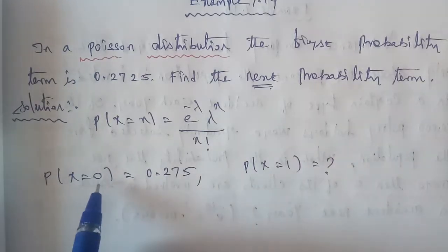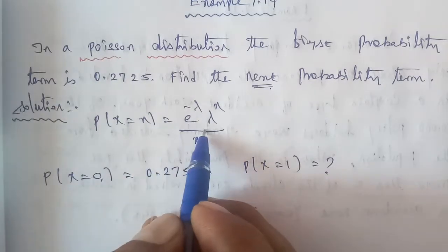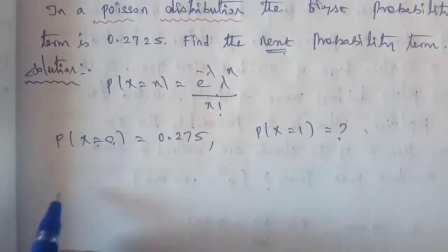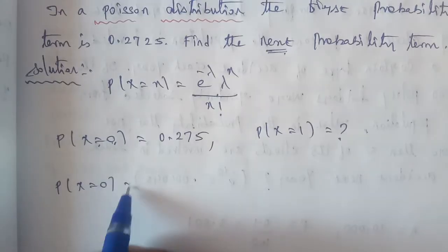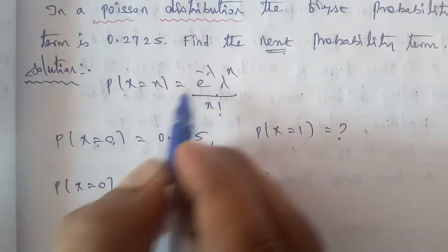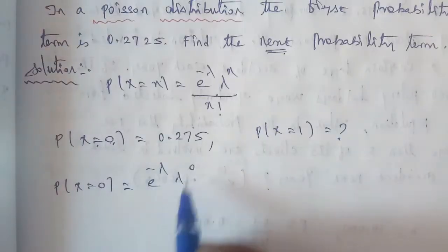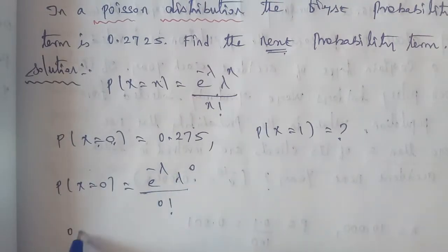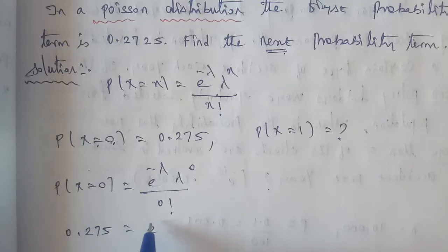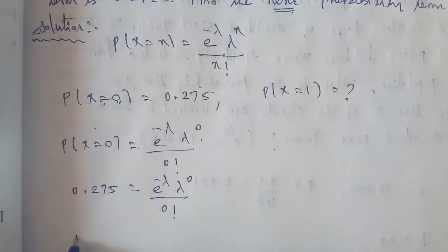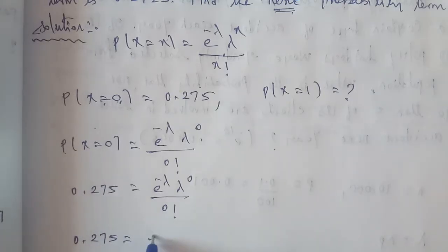First of all, substitute x equal to 0 into the formula. So P of x equal to 0 is equal to e power of minus lambda, multiplied by lambda power of 0, divided by 0 factorial. Since lambda power of 0 is 1 and 0 factorial is 1, we get: 0.2725 equals e power of minus lambda.